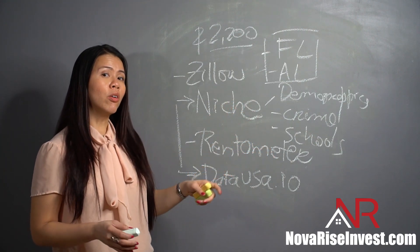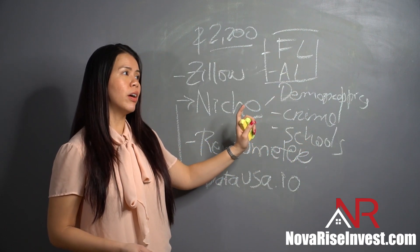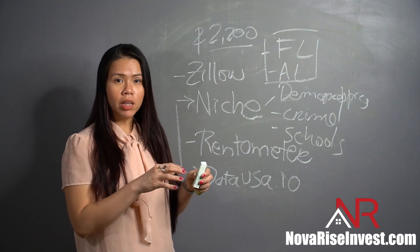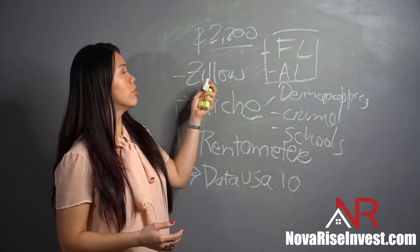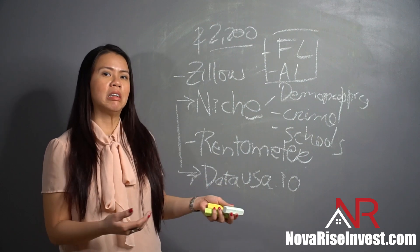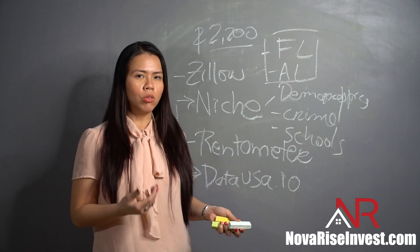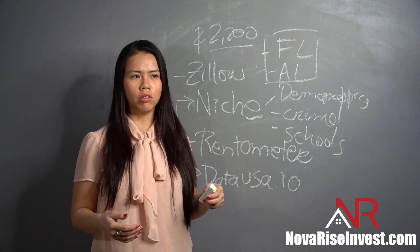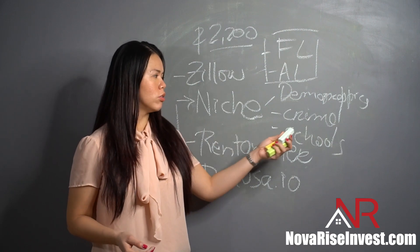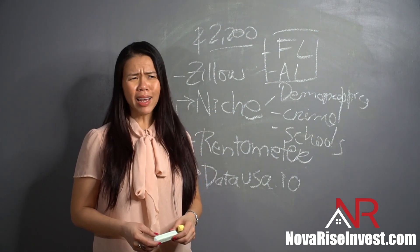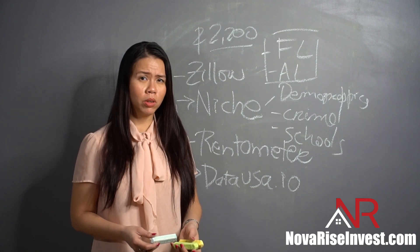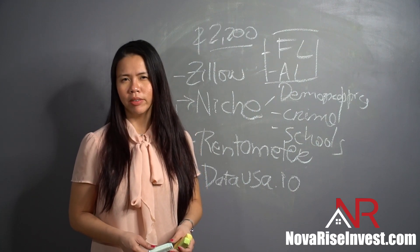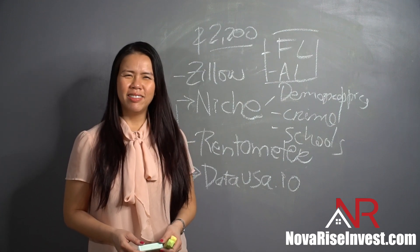If and only if all the numbers make sense and you've found a good area, you have two choices: leverage Google Earth and type in the address of a property you found through Zillow, or actually take a trip to the area to check it out yourself. Personally, I don't travel to my rentals because I don't intend to live there — if my research went well, I spoke to realtors familiar with the area, and I checked all the crime and school stats, there's no need for me to go.